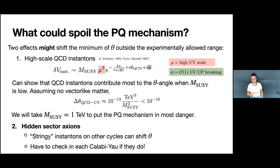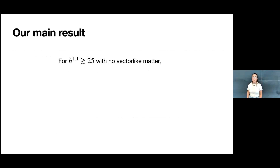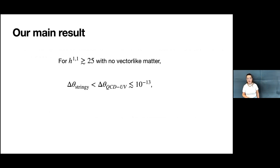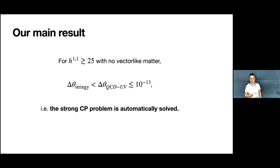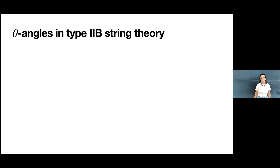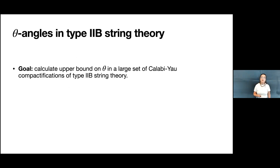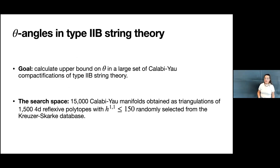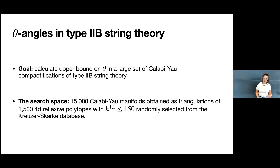To spoil the main result: for H^{1,1} greater than about 25 with no vector-like matter, the contribution of stringy instantons to the QCD theta angle is less than the contribution of high-scale QCD instantons, which is less than 10^{-13}—i.e., the strong CP problem is automatically solved. Our search space is 15,000 Calabi-Yau manifolds from triangulations of 1,500 reflexive polytopes with H^{1,1} less than 150, randomly selected from the Kreuzer-Skarke database.